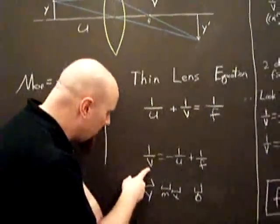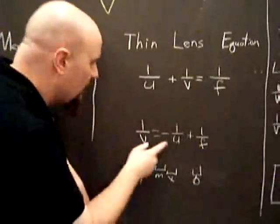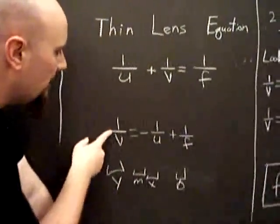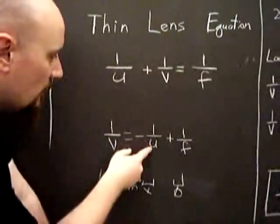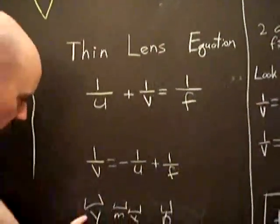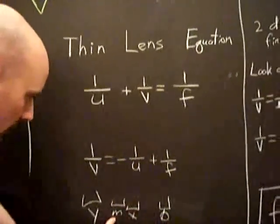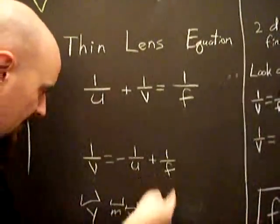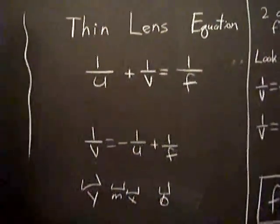So if all we did was move the U to the other side, we have one over V equals minus one over U plus one over F. That's a linear equation. In other words, this would be the Y, the negative one would be the M, the one over U would be the X, the one over F would be the B. Y equals MX plus B.